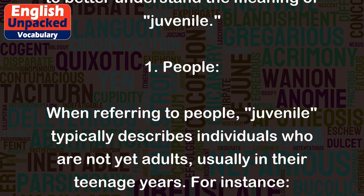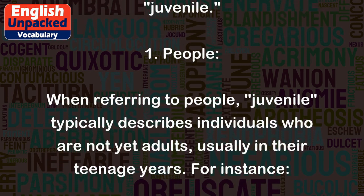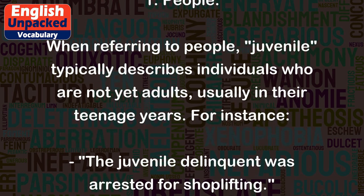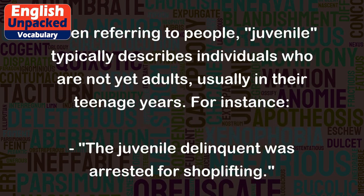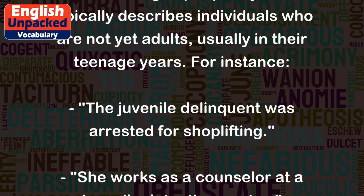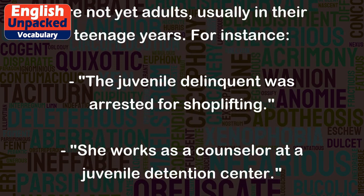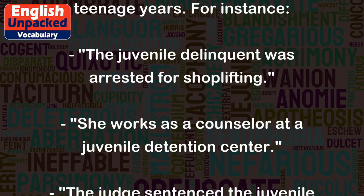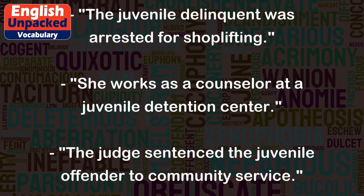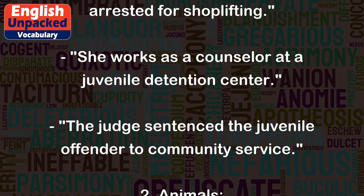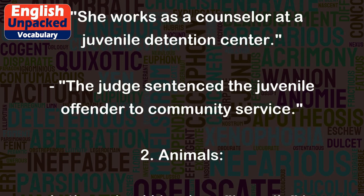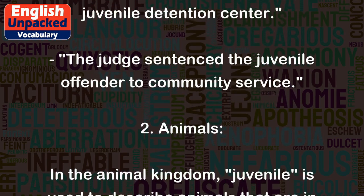1. People. When referring to people, 'juvenile' typically describes individuals who are not yet adults, usually in their teenage years. For instance: the juvenile delinquent was arrested for shoplifting. She works as a counselor at a juvenile detention center. The judge sentenced the juvenile offender to community service.